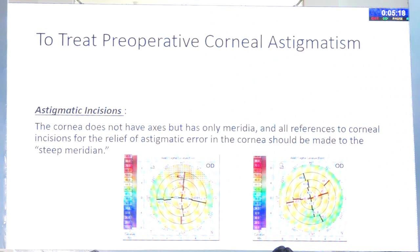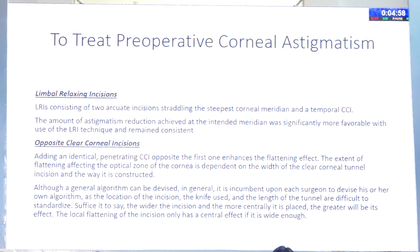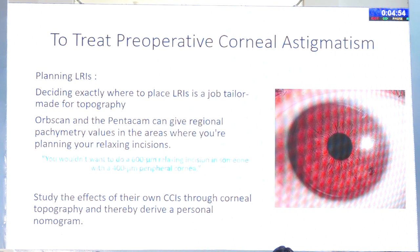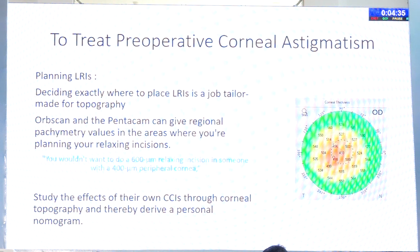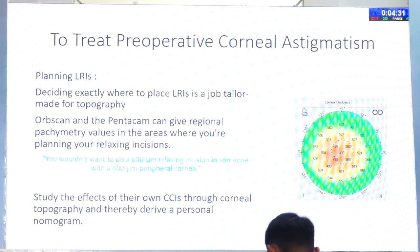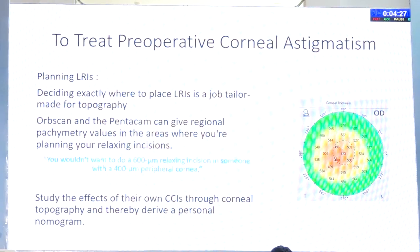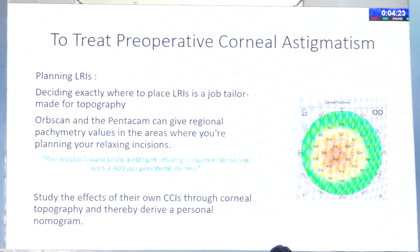Once you have the corneal astigmatism, treatment options are astigmatic incisions, LRIs, OCIs, and toric IOLs. For astigmatic incisions, the cornea doesn't have an axis — it's just a meridian — and you need to place the incision on the steep meridian. With current 2.2–2.4 mm temporal incisions, the contribution to corneal astigmatism is not much. When planning an LRI or corneal incision, you need to know the corneal thickness at the periphery — you cannot do a 600-micron LRI when the cornea is only 400 microns. Knowing where to place and the depth of the incision depends on topographic values, and you need to design your own nomogram.